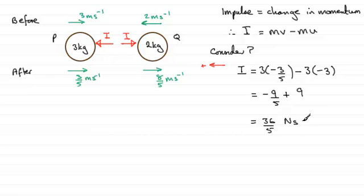So check that out. Check that you can get exactly the same result if you look at Q. All right, make sure you take positive to the right in the direction of I, and then just do the mass times the final velocity minus the mass times the initial velocity, but take care over these signs. And as I say, you should find you get 36 fifths.